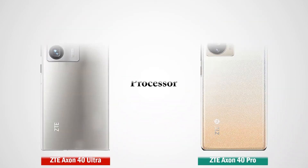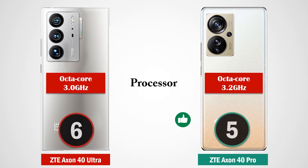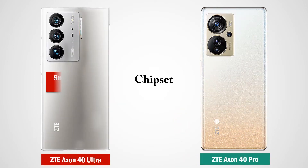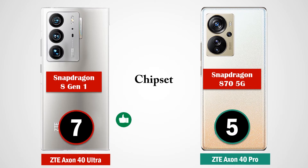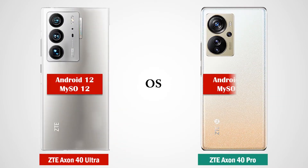Looking at performance, the ZTE Axon 40 Ultra has an octa-core processor of up to 3GHz while the Axon 40 Pro operates on an octa-core processor of up to 3.2GHz. The chipset on the ZTE Axon 40 Ultra is a Snapdragon HN1 while on the ZTE Axon 40 Pro it is a Snapdragon 875G. Both phones run on Android 12.